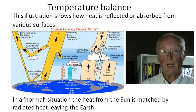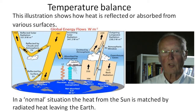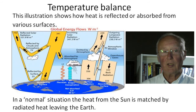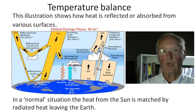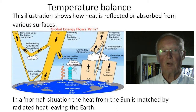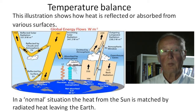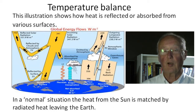Currently there is an imbalance of 0.9 of a watt per square metre, which is the additional heat trapped by greenhouse gases. If we had no greenhouse gases like water or CO2, we would be 37 degrees cooler, and the world would be a frozen ball of ice.